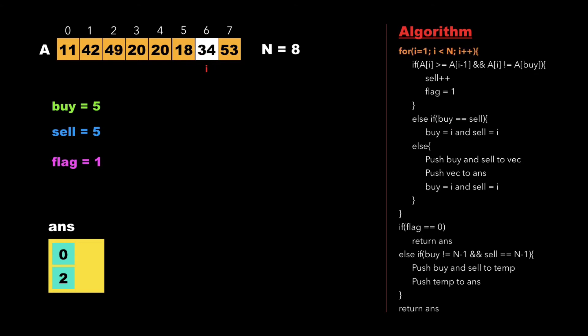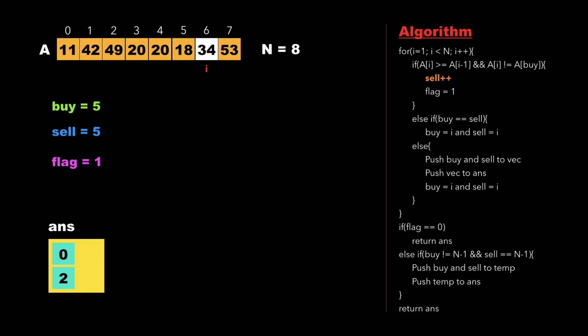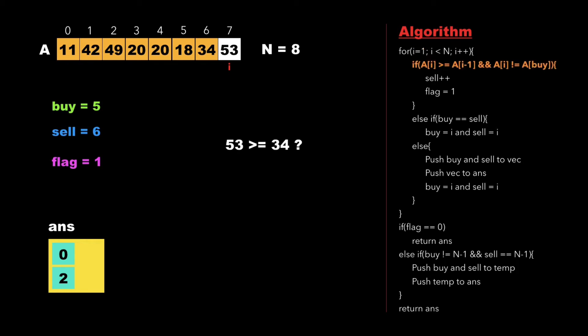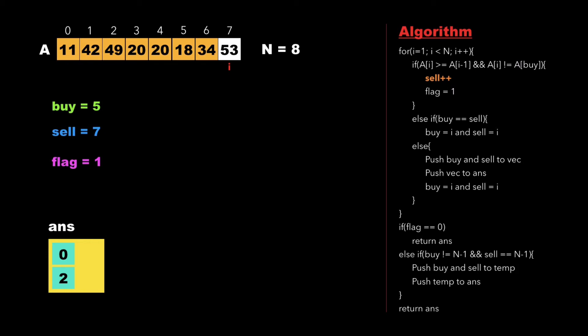Now i points to location 6 or the value 34, where we check whether 34 is greater than 18. Yes it is, as well as 34 is not equal to 18. Therefore we increment the value of sell to 6 and increment i. Now i points to the last memory location of the array where we check whether 53 is greater than 34. Yes it is, as well as 53 is not equal to a[buy] which is 18. Therefore we increment the value of sell to 7, the value of flag is 1, and we increment i.